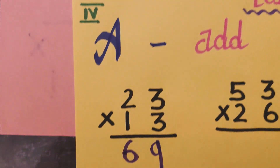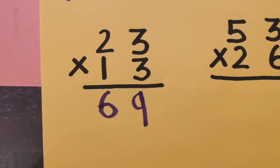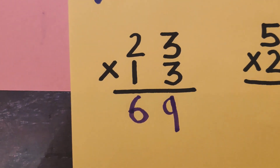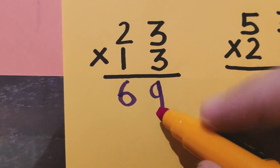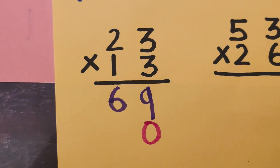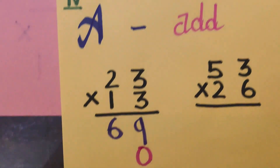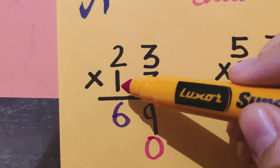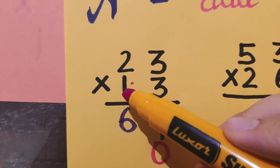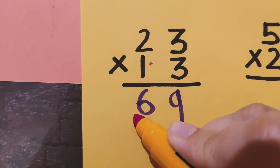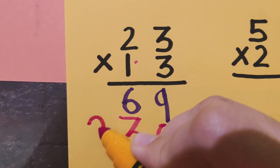Now let's recall the second step — put 0. So we come back and put 0 in the second line. Now the third step: multiply with tens. Here the tens digit is 1, so multiply 1 with 3 first and then with 2. So 1 times 3 is 3, and 1 times 2 is 2.